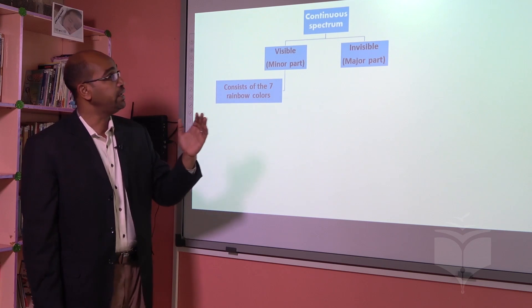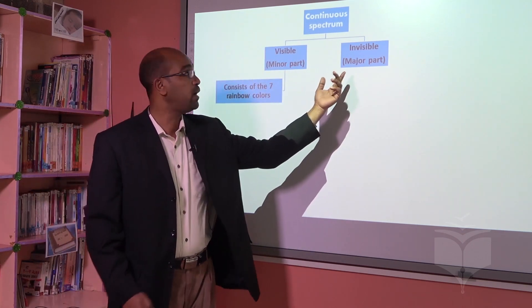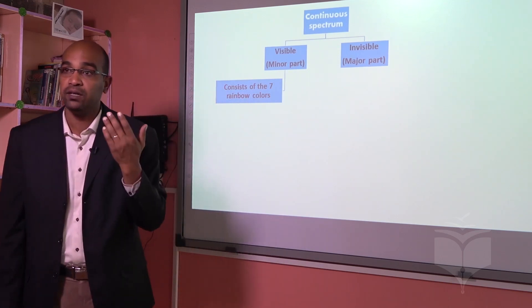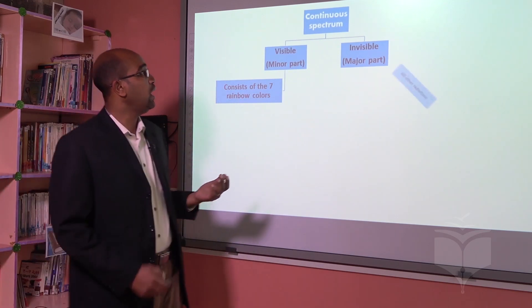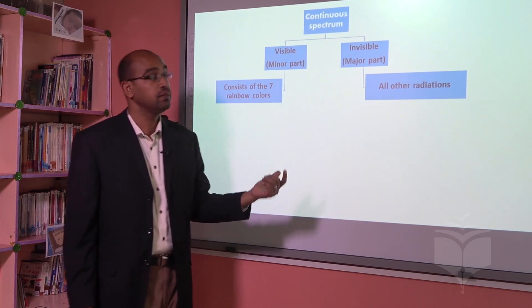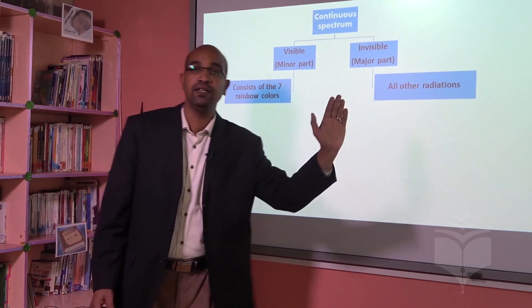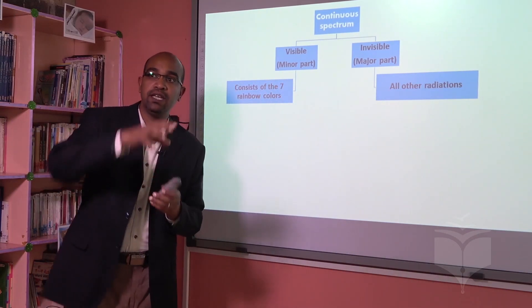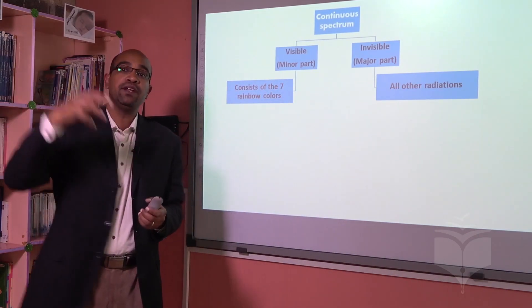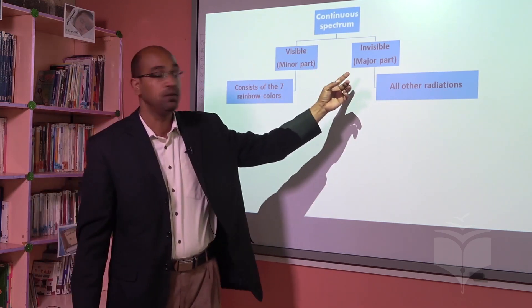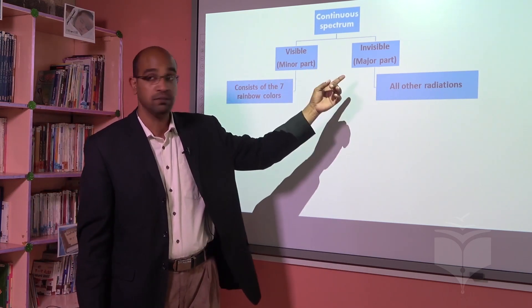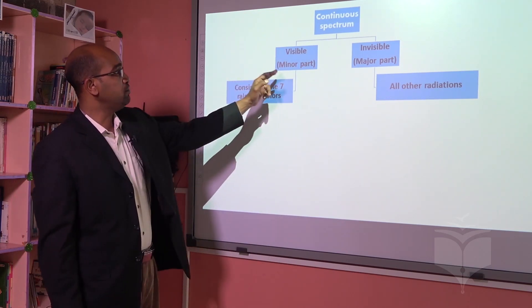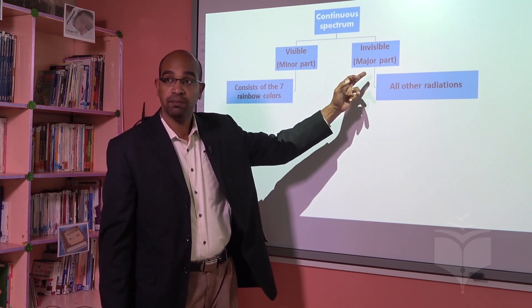On the other hand, we have the invisible part, which we call the major part because we cannot see it with the human eye. This part contains all other radiations — meaning the whole spectrum minus visible light. The rest are called invisible radiations or invisible spectrum. So visible is the minor part, and invisible is the major part.